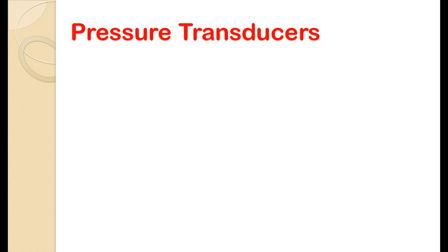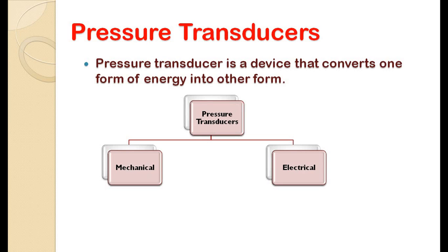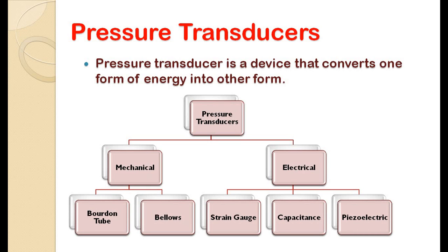A pressure transducer is a device that converts one form of energy into another. We can use this device for pressure measurement — it converts pressure energy into mechanical or electrical signals that can then be measured. Depending on the output signal, transducers are divided into two types: mechanical and electrical. Examples of mechanical transducers are the Bourdon tube and bellows; examples of electrical transducers are the strain gauge, capacitance gauge, and piezoelectric gauge.